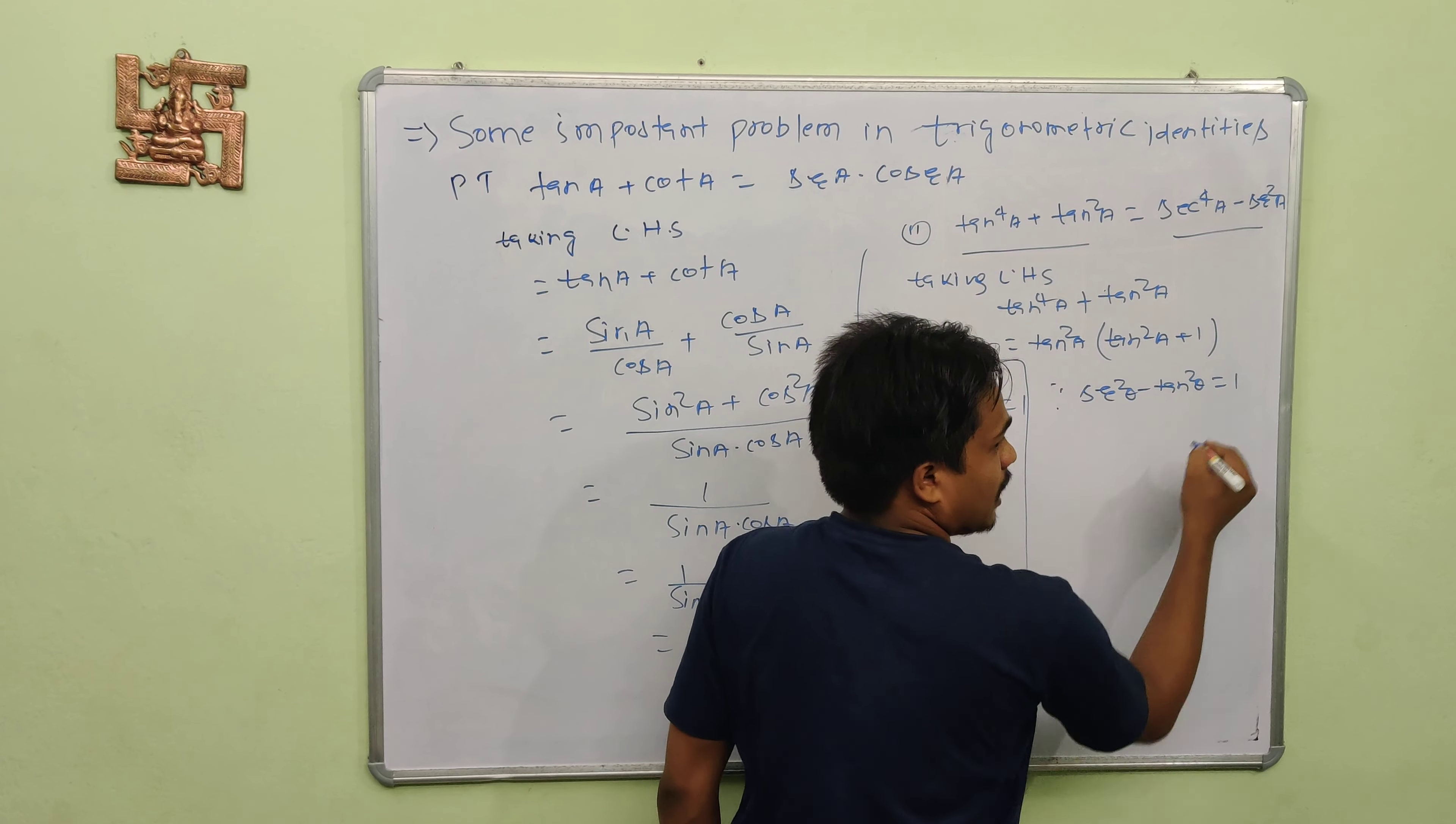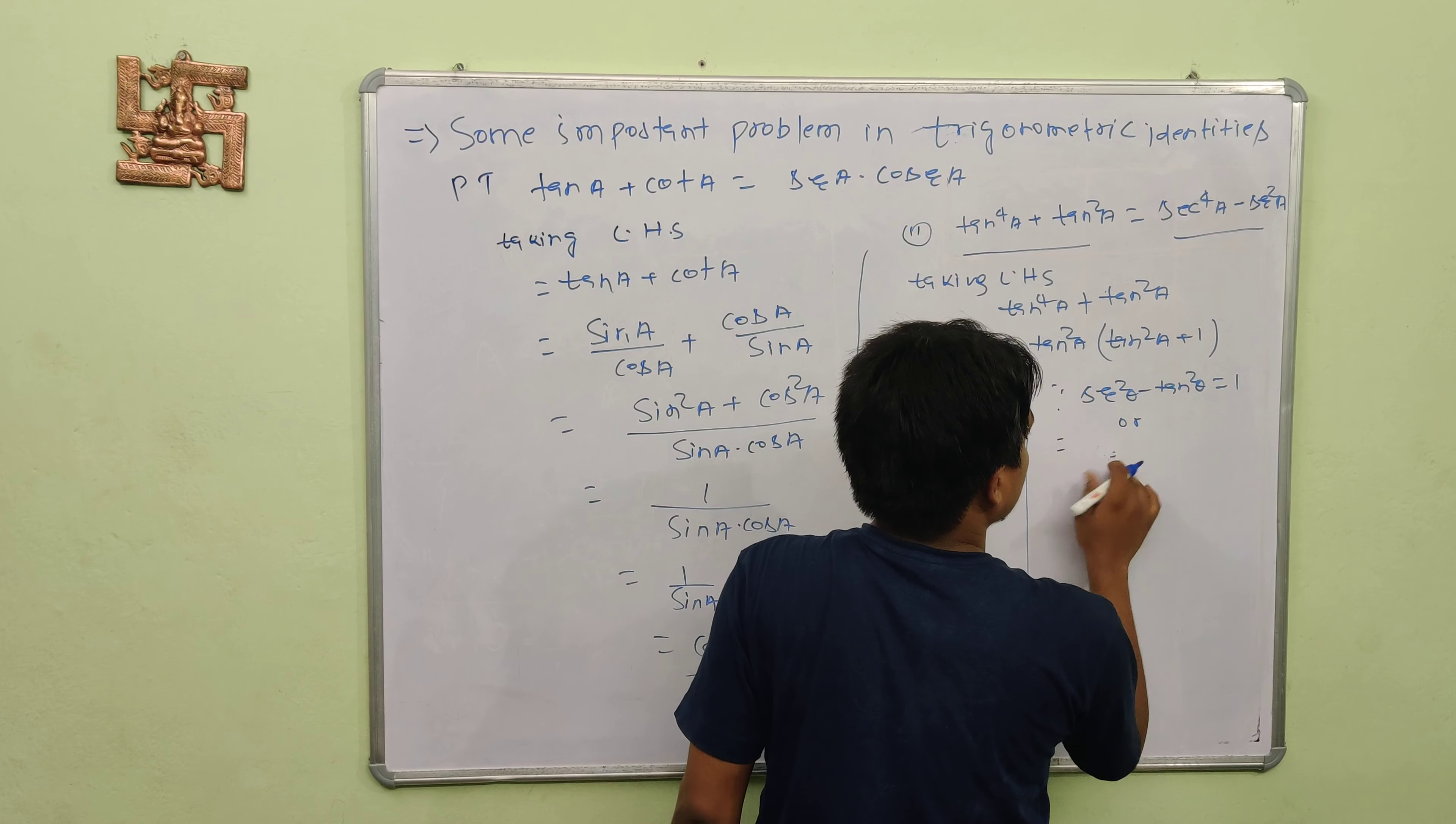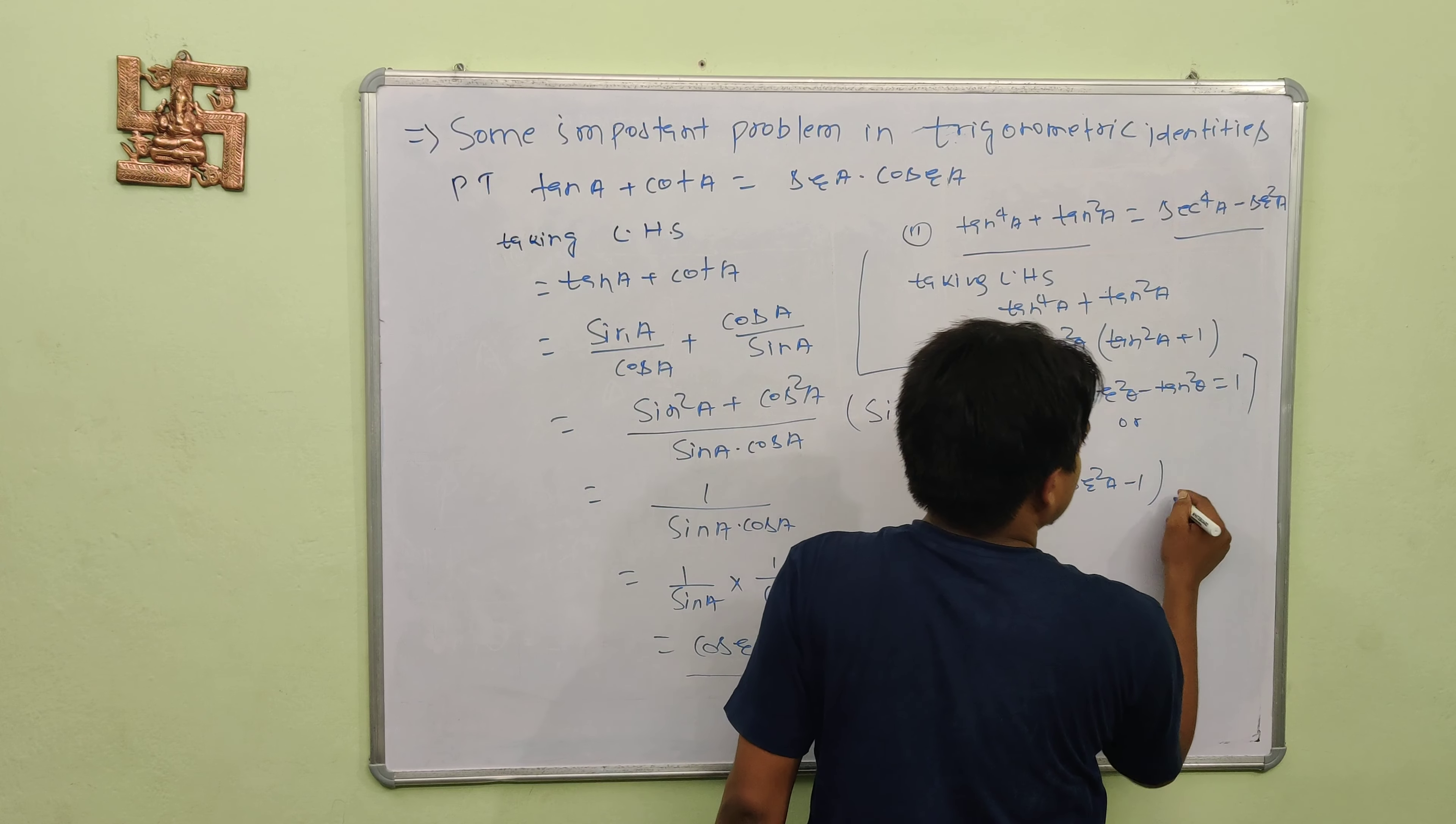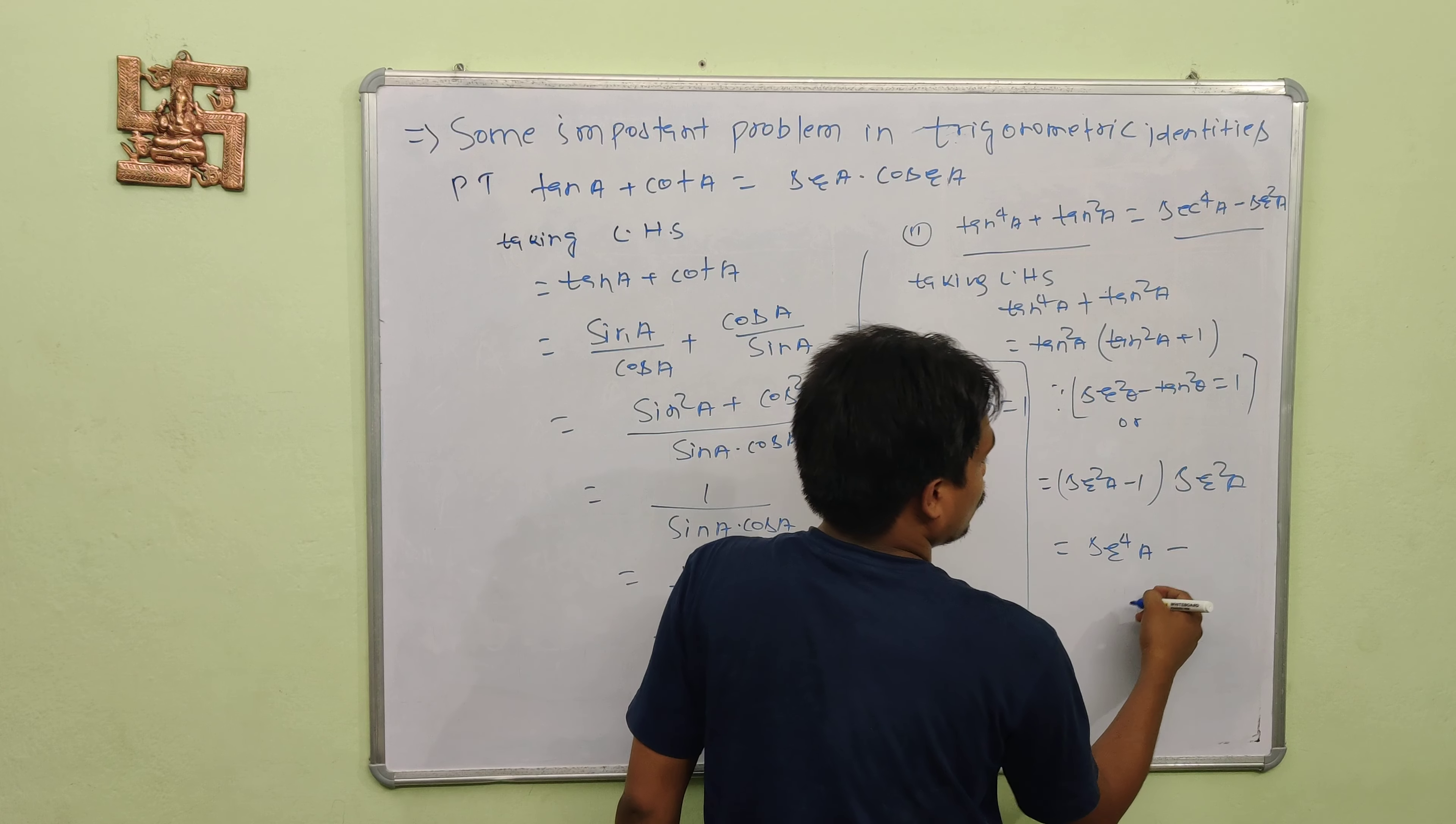We know that we have this formula: tan squared A equals sec squared A minus 1. So we substitute tan squared A with sec squared A minus 1.